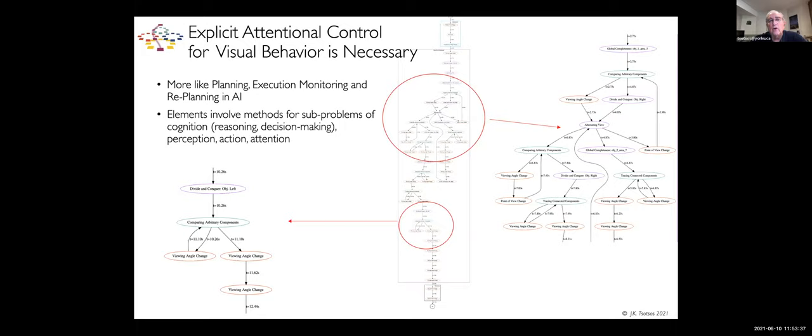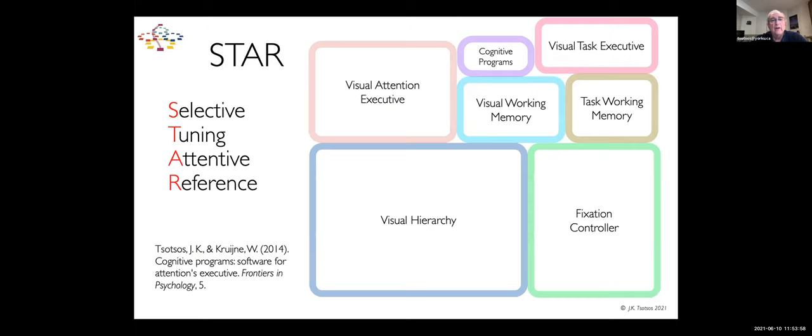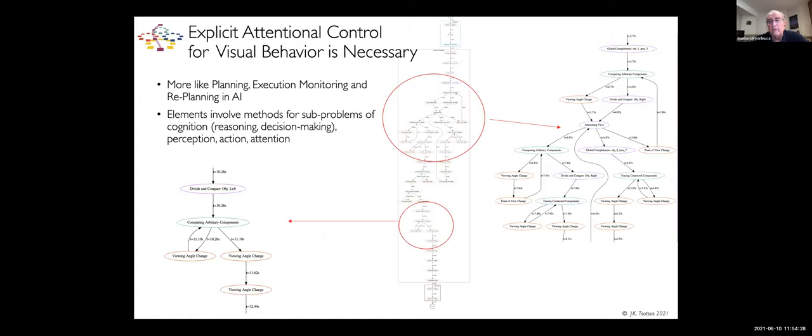From our perspective, I think we now have found our example. This is where this all started, we were looking for what example will be able to really test what the elements of attentional control are for our attention model and its interactions with memory and other components. As a result, we proposed this architecture that we've called STAR, the selective tuning attentive reference model.